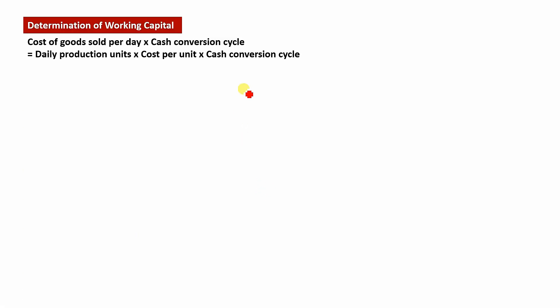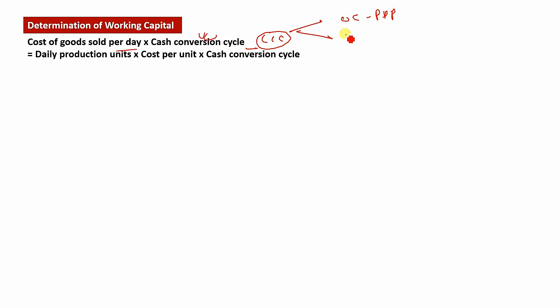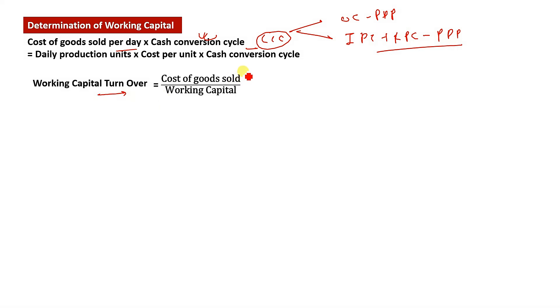Then we have the working capital formula: Cost of Goods Sold per day multiplied by the Cash Conversion Cycle. This formula uses the operating cycle, or ICP minus PDP. We can also compute working capital turnover as Cost of Goods Sold divided by working capital.